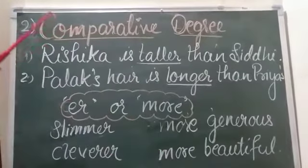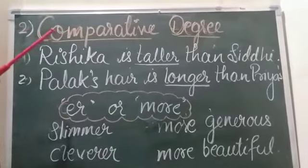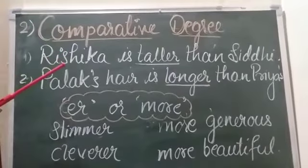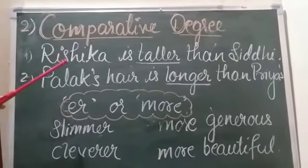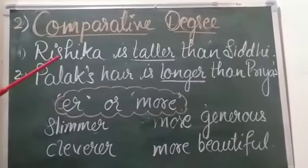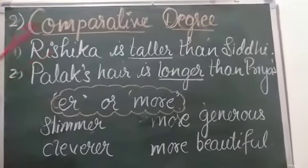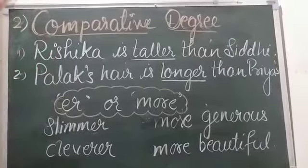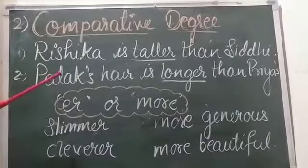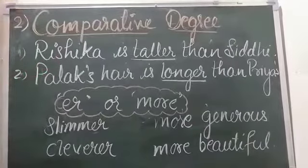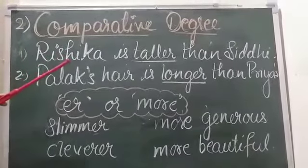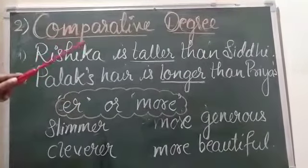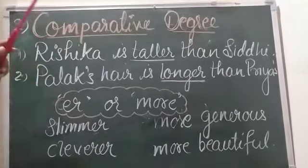So comparative degree means when we compare two persons, places, or things and we find a difference — they are different and unequal — all those words come under comparative degree.